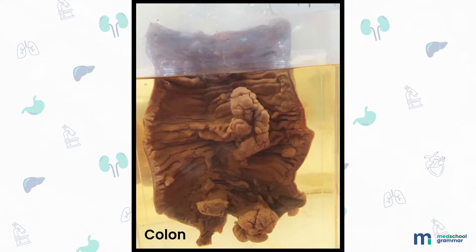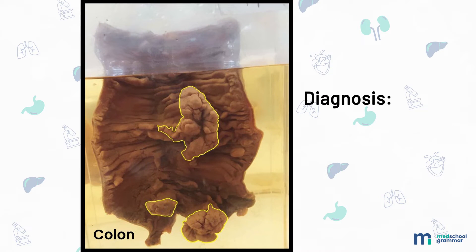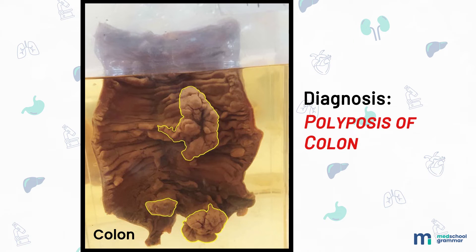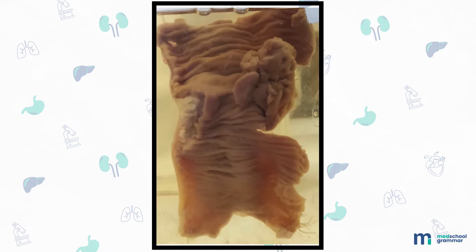This is a specimen of a segment of colon measuring 6.5 by 4 centimeters. The external surface is unremarkable. The internal surface shows a mucosa with multiple pedunculated, grayish-white, cauliflower-like growths of variable sizes; a few small sessile polyps are also seen. Diagnosis: this is a specimen of polyposis of the colon.